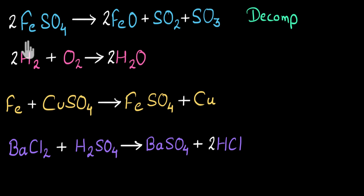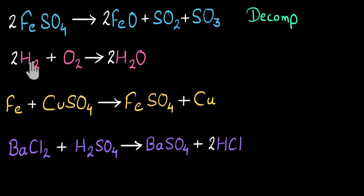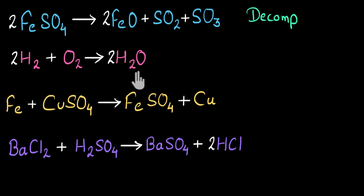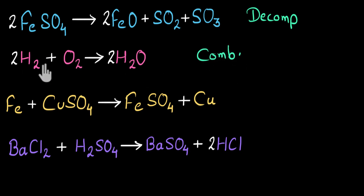Over here I see that I have hydrogen and oxygen on the reactant side, and on the product side I'm getting water, H₂O. I notice that I have multiple reactants but only one single product. The reactants are combining to give me one single product, and this is an example of a combination reaction. In combination, multiple reactants combine to give us one single product.